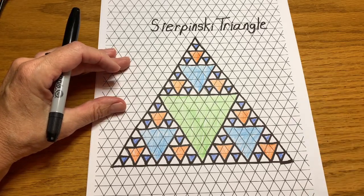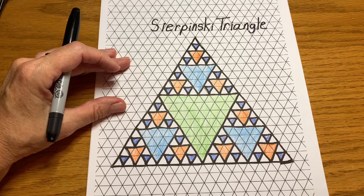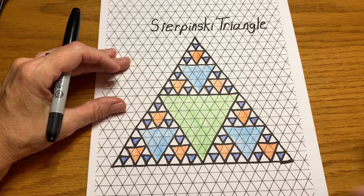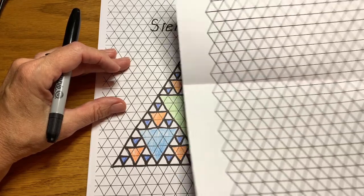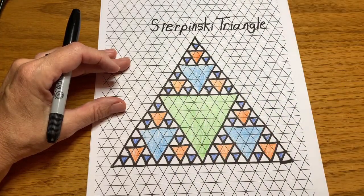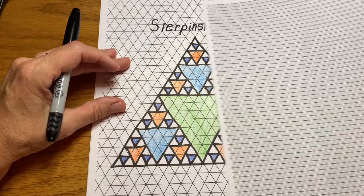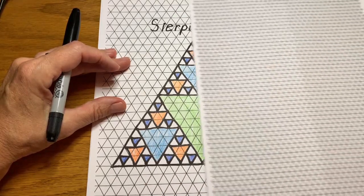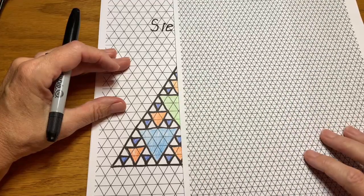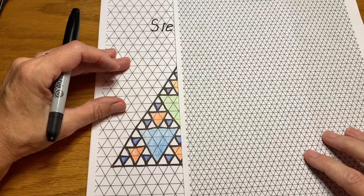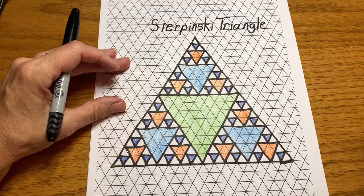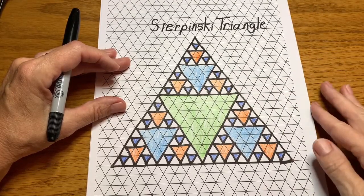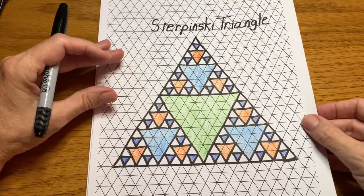In my packet that's available on my website, I have three different sizes of this triangle paper. This is the medium, there's a large, and then there's also a small. I like the medium because I can easily fit the 16 by 16 triangle. The small would do it as well. I haven't used the small one yet, I might try it soon. So we're going to use the medium-sized triangle paper to create our Sierpinski Triangle.